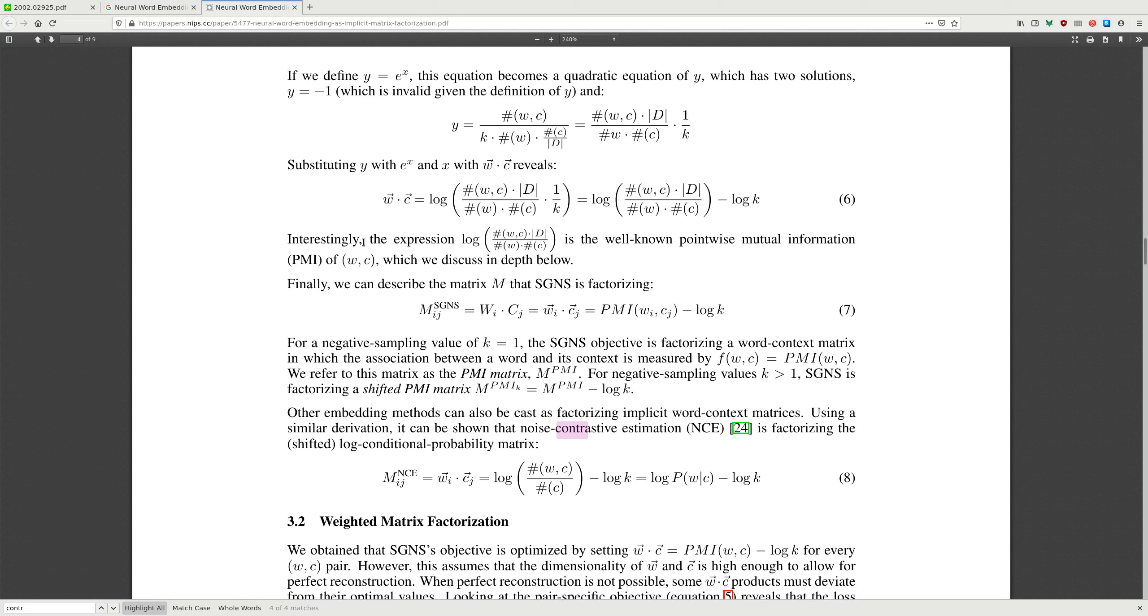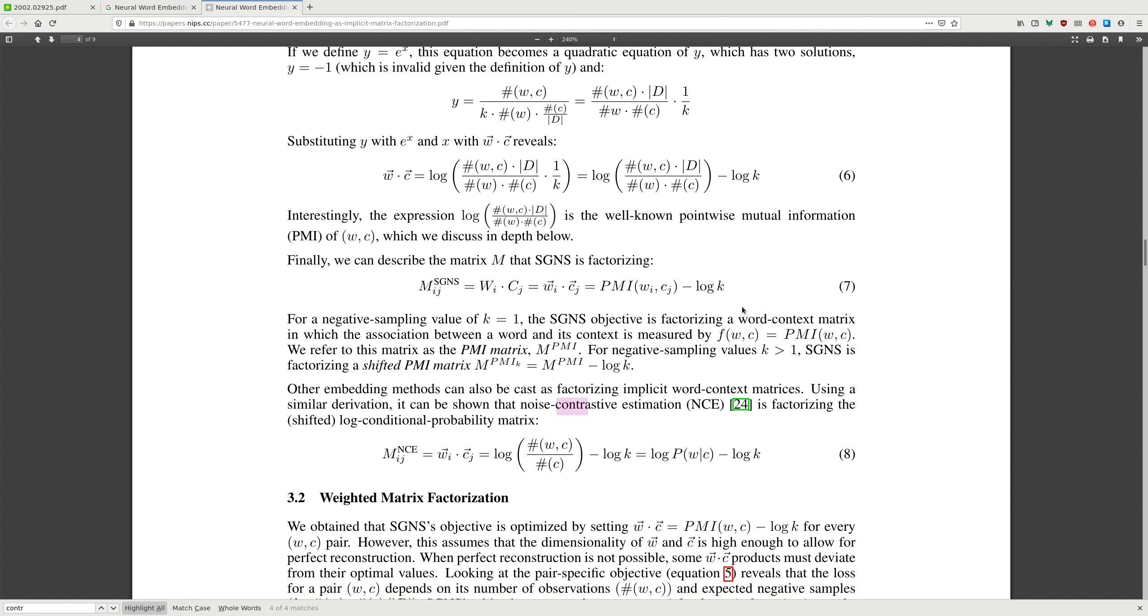And here is the PMI objective that can be seen. Interesting, the expression is the well-known pointwise mutual information, which is discussed in the paper. Finally, we describe the matrix as factorizing. It's PMI shifted by log k.